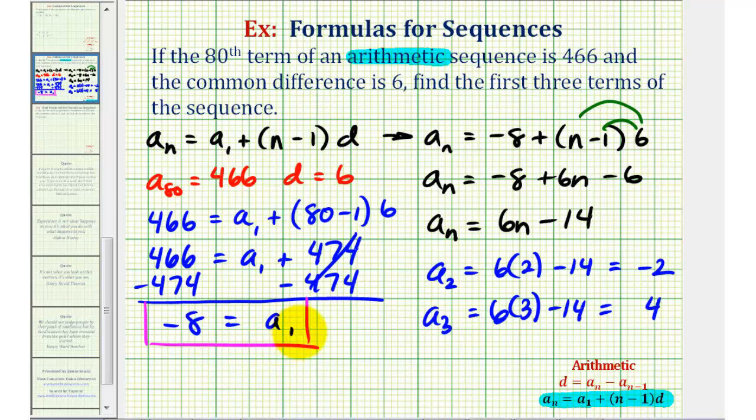So the first three terms of the sequence are negative eight, negative two, and positive four. Of course the sequence will continue, but we're only asked to find the first three terms. I hope you found this explanation helpful.